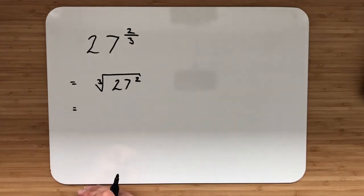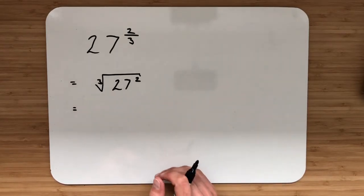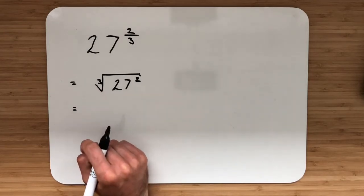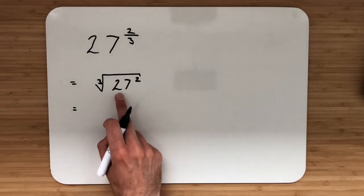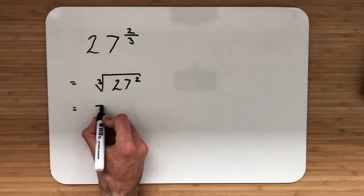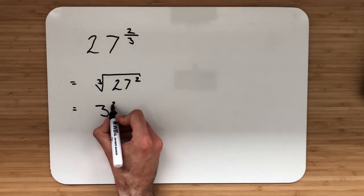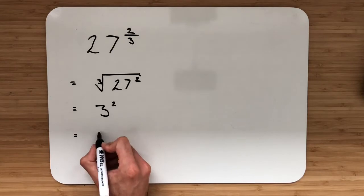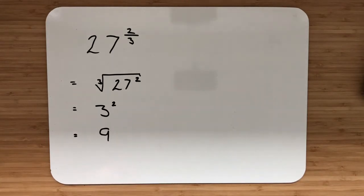Always make the number smaller before you make it larger — it will be significantly easier in a non-calculator question. The cube root of 27: I'm looking for a number I can multiply by itself three times to give me 27, so the cube root of 27 must be 3. I then have to square that: 3 squared gives a final answer of 9.